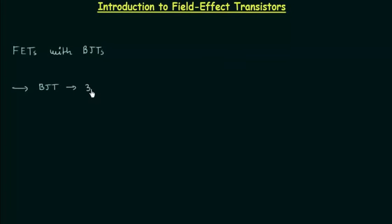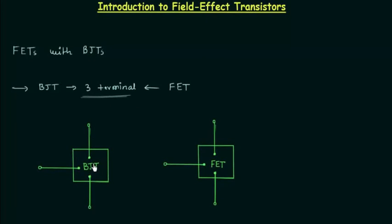BJT is a 3-terminal device, and like BJT, FET is also a 3-terminal device. Both types of transistors are represented with their symbols. In a BJT, the 3 terminals are named as base, collector, and emitter. Likewise, FET also has 3 terminals.